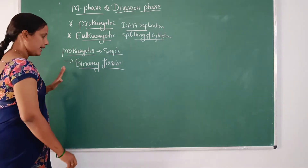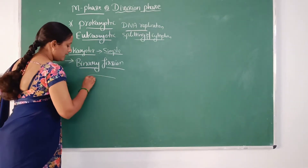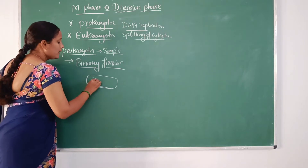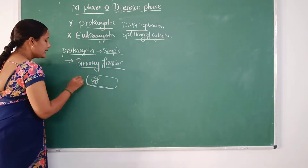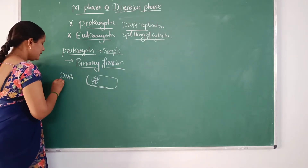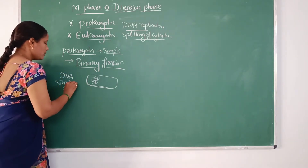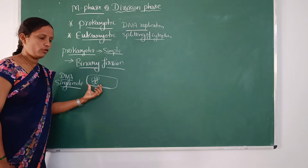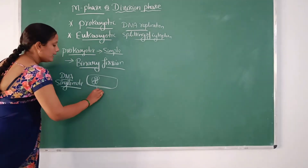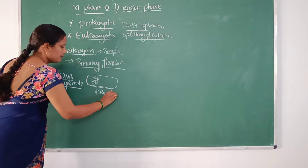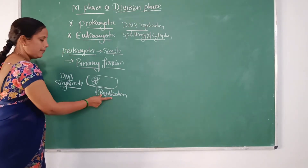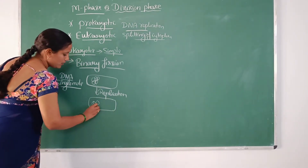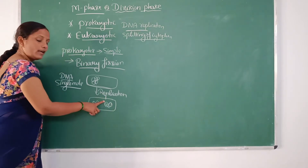In binary fission, considering a prokaryotic cell — for example a bacterial cell — the DNA is a single molecule, so there is not much complexity. Initially, the DNA undergoes replication, producing two copies of the same DNA. So two copies of DNA are produced.